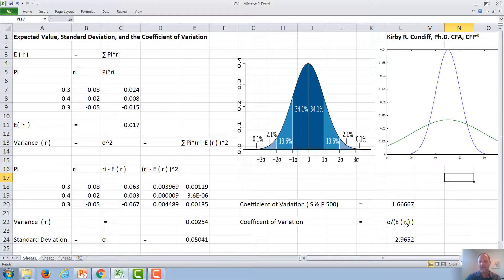Ideally, you would like a high expected rate of return and a low risk or low standard deviation. If we look at this graph, since both of these investments have the same expected rate of return, the blue one has a lower risk than the green one, so the blue one would be preferred, and that is the same thing as saying it would have a lower coefficient of variation.